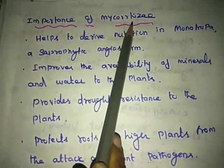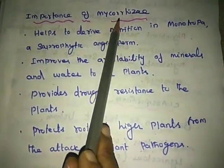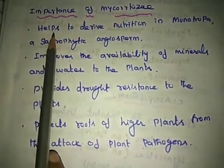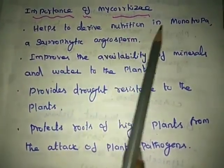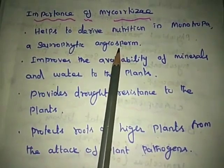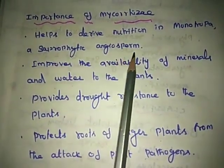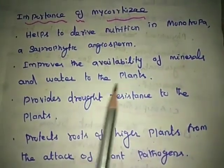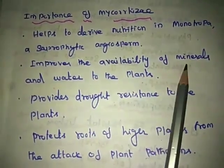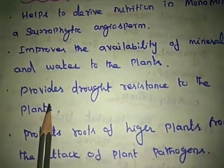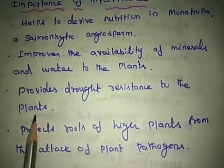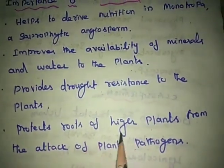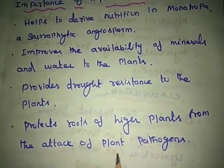The importance of mycorrhizae includes: helping to derive nutrition in Monotropa, a saprophytic angiosperm; improving the availability of minerals and water to the plant; providing drought resistance to the plant; and protecting roots of higher plants from attack by plant pathogens.